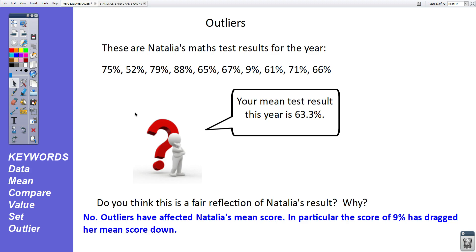And outliers have affected Natalia's mean score. In particular, the one score of 9% has dragged her mean score down. Let's have a look. Her mean is 63.3%. She's only actually scored under 63.3, three times, 52, 9 and 61. And that 9% has absolutely dragged her score right down. This is called an outlier. It's a totally untypical mark for Natalia. What we tend to do with statistics is if we've got such an outlier is we would tend to ignore the outlier completely and total everything else and divide by how many other data values there are.